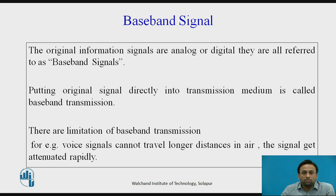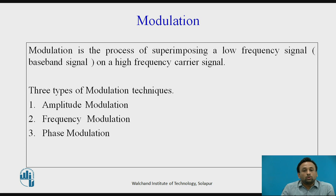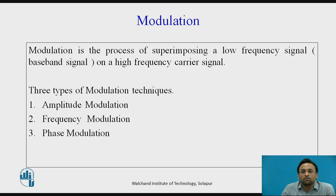There are some limitations of baseband transmission. For example, a voice signal cannot travel a longer distance in air, as the signal gets attenuated rapidly. The baseband signal, information signal, and modulating signal are one and the same. To avoid this attenuation, we have to perform modulation — the process of superimposing a low-frequency baseband signal onto a higher-frequency carrier signal.